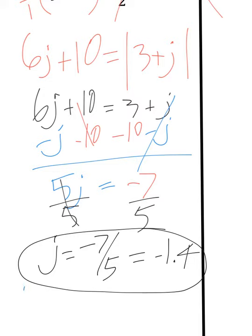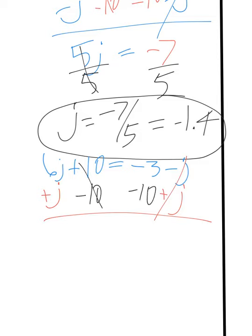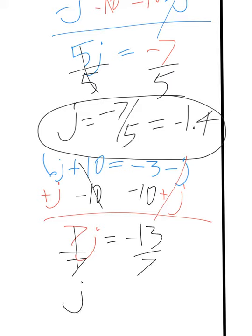Now flip the sign: 6j plus 10 equals negative 3 minus j, because it was 3 plus j. Get the j's to one side by adding j over. So I have 6j plus j, which is 7j, and negative 3 minus 10, which is negative 13. Dividing gives j equals negative 13 over 7, which is approximately negative 1.86.